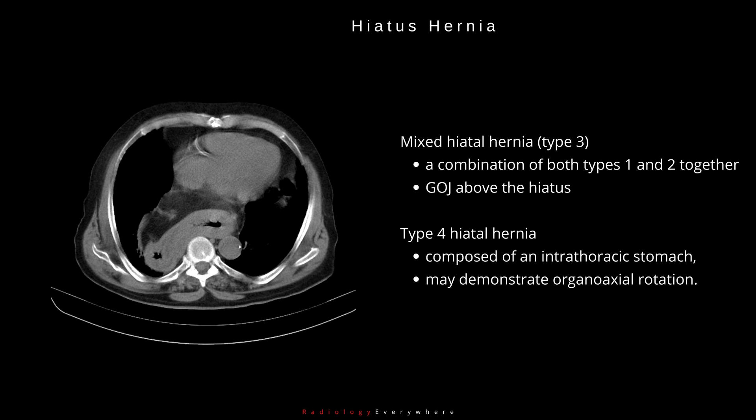Type 4 hiatal hernia is composed of an intrathoracic stomach, which may demonstrate organoaxial rotation.